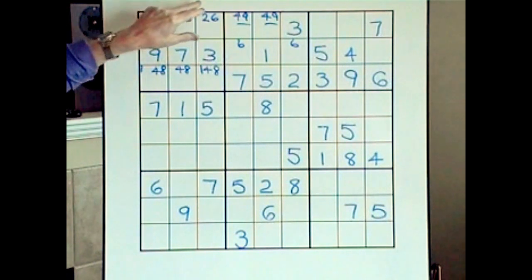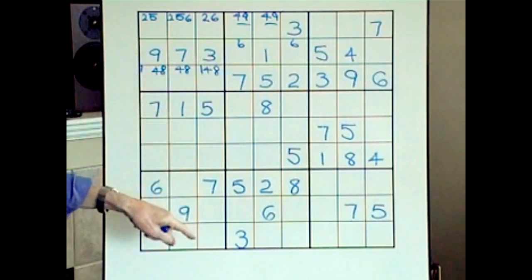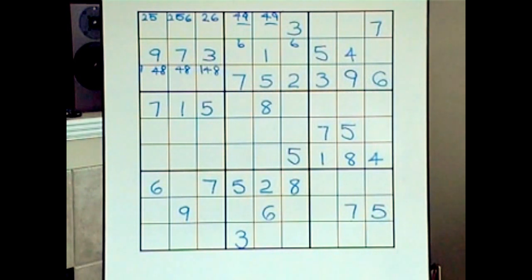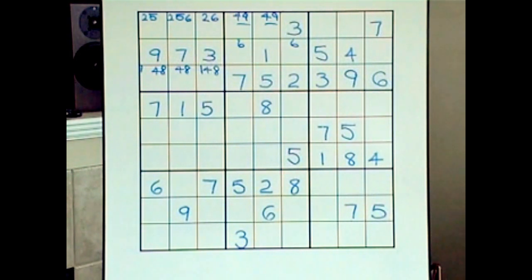We now have a good idea of what numbers can go in this block using that system. As we move along and get more numbers filled in, we can cross them off. I should mention: you'll notice that in both the courses I've offered and these tutorials, I've been erasing the little candidate numbers rather than crossing them out. The reason is it becomes less cluttered. But some people prefer not to do that, so on this puzzle I'm going to try to remember not to remove those little numbers — the decision is yours.